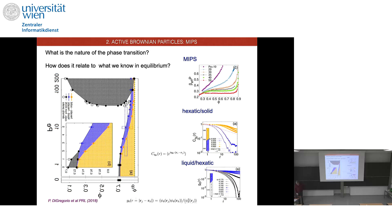The results required considerable effort — particularly from Lino — to identify order parameters as we would in equilibrium. For MIPS we used the equation of state and densities; for the hexatic and solid we used the standard order parameters. We computed the pressure and used the Maxwell construction combined with histograms of local concentrations to identify coexistence regions.